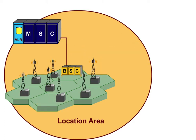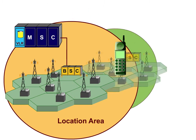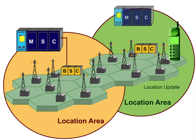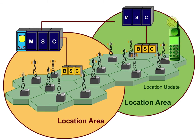If a mobile phone subscriber changes to a new location area, a location update takes place automatically. So the location of the subscriber is known to the network via a VLR linked to the MSC.